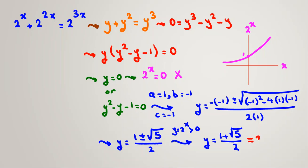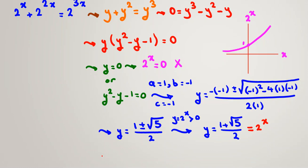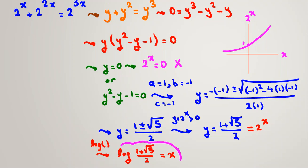So we take y equals (1 plus root 5) over 2. Since y equals 2 to the x, to find x we take the logarithm of both sides with base equal to the argument. The answer is x equals log of (1 plus root 5) over 2.